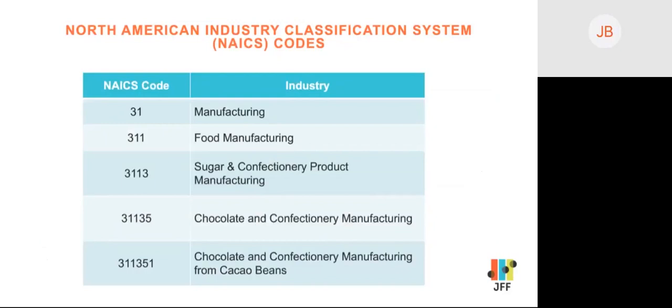Here you'll see an example of how industries are organized using the NAICS system. As we move from two to six-digit codes, we get more specific about the types of establishments within an industry. For example, NAICS code 311351 refers to establishments involved in chocolate and confectionery manufacturing from cacao beans, which is quite specific.